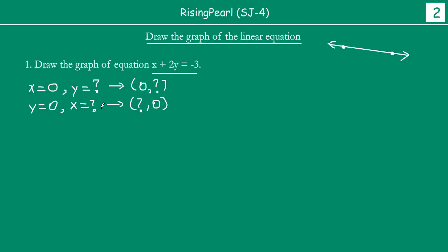More often than not, you want to have a third point. Why? When you have a straight line drawn on graph paper and you have two points, you can always use your ruler or scale to draw the line. But a third point gives you confirmation — it makes sure that you do indeed have a straight line.